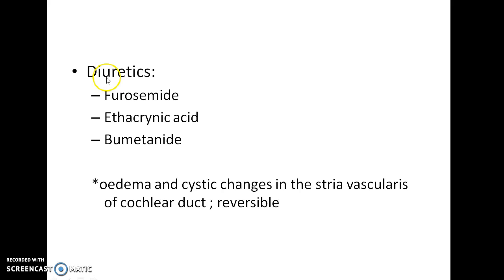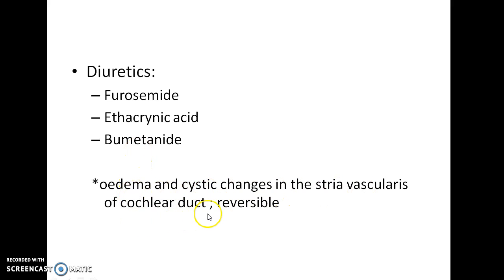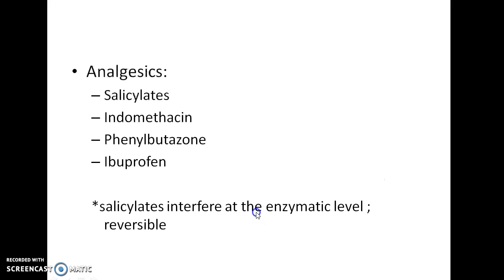Other ototoxic drugs are diuretics like furosemide, ethacrynic acid, and bumetanide. They cause edema and cystic changes in the stria vascularis of the cochlear duct. These changes are reversible.